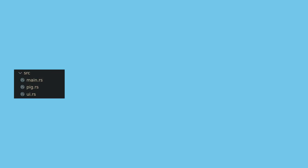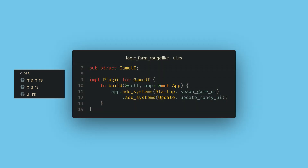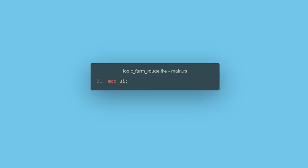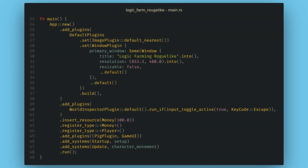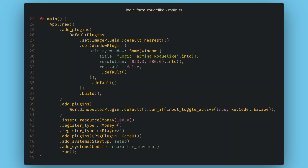So on that note, let's look at implementing a very basic UI system to show the player's money. First up, I'm going to make another new file called ui.rs, and I'll create a game UI plugin here. Then back in main, I need to remember to add mod UI to the top of the file and add the plugin to my app builder. Remember there is a link in the description to the GitHub repo for this video if you get lost with all of the new files.